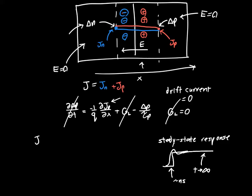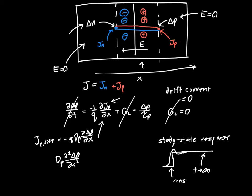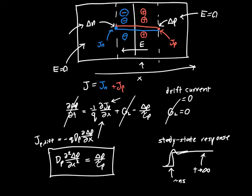We know that the diffusion current for holes is minus Q times D_P times d(delta P)/dx. Plugging that in and erasing all the other simplified terms, we end up with the final form of the continuity equation: D_P times the second derivative of delta P with respect to x squared equals delta P over tau P. This is the continuity equation we need to solve in the N region to find the carrier concentration as a function of x.